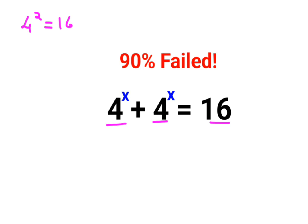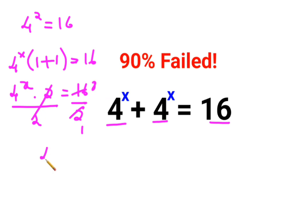In this case, we will first take 4^x common. Then we're left with 1 + 1, so basically we're getting 4^x multiplied by 2 equals 16. Now to find the value of x, we will divide both sides by 2. After canceling, we get 4^x equals 8.